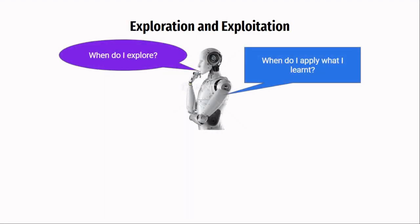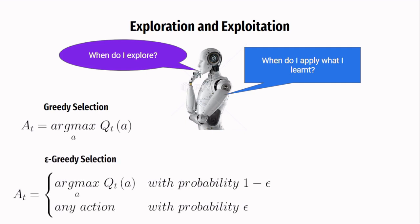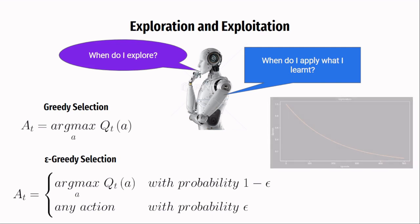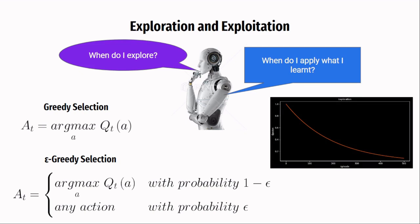A major problem for reinforcement learning agents is the Exploration-Exploitation Dilemma: how do we decide when the agent should explore and when it should exploit what it has learned? The simplest way to select actions in model-free methods is to select the action with the most action value — this is called greedy selection. An alternative is to behave greedily most of the time but with small probability epsilon select any action randomly. This is called an epsilon-greedy action selection rule. During training, we decay this epsilon over time to reduce exploration and increase exploitation of the knowledge the agent has acquired.